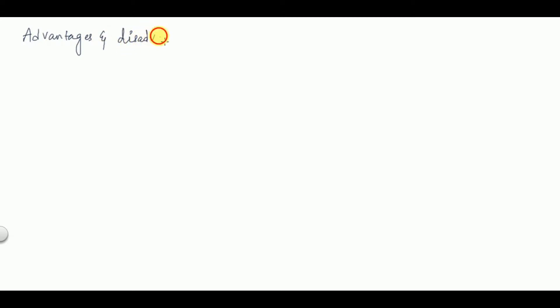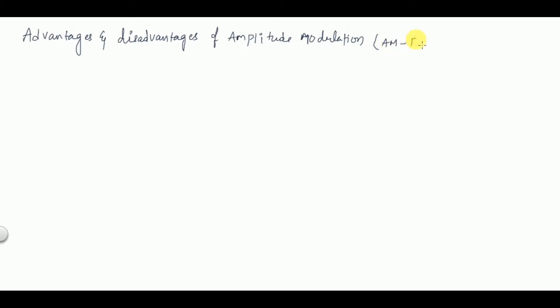Hello everyone, welcome back. In this video we are going to learn about advantages and disadvantages of amplitude modulation. Amplitude modulation is also called amplitude modulation full carrier — you'll find it written as AMFC in some textbooks. It represents pure amplitude modulation technique only, so AMFC also represents amplitude modulation only. First we'll discuss the advantages, then the disadvantages.